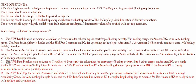C. Use AWS Data Pipeline with an Amazon CloudWatch Events rule for scheduling the start/stop of backup activity. Run backup scripts on Amazon EC2 in a single availability zone. Use auto-scaling lifecycle hooks and the SSM Run Command on EC2 for uploading backup logs to Amazon RDS. Use Amazon SNS to notify administrators with backup activity metadata.